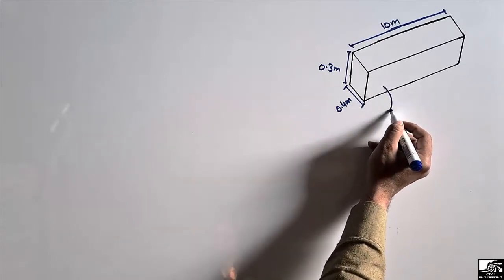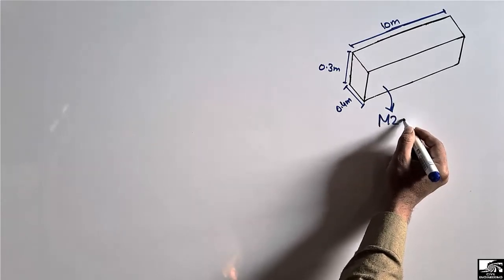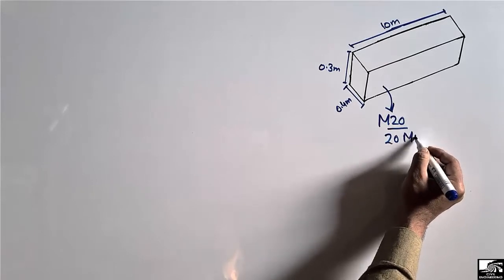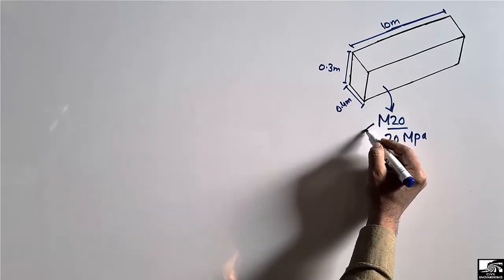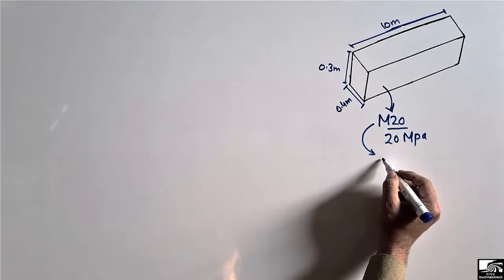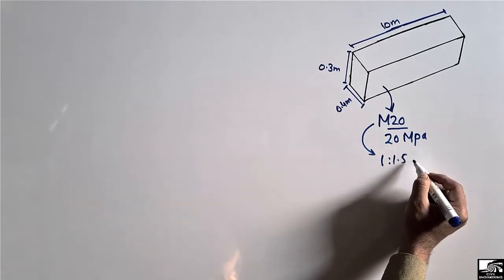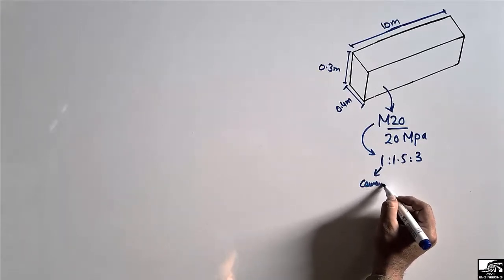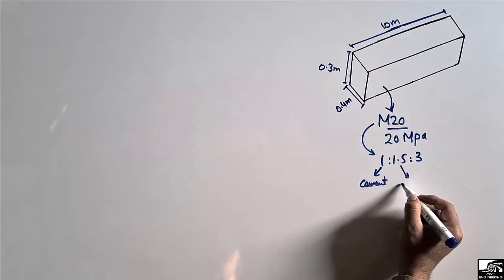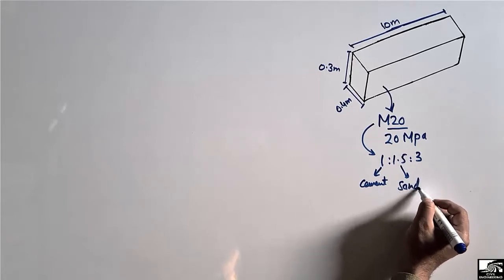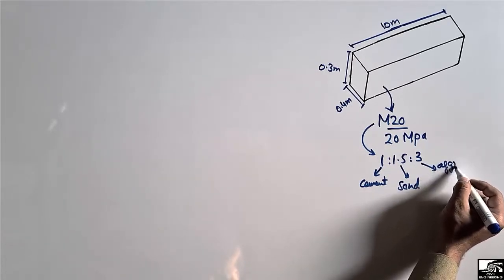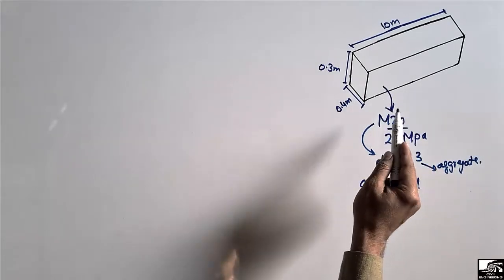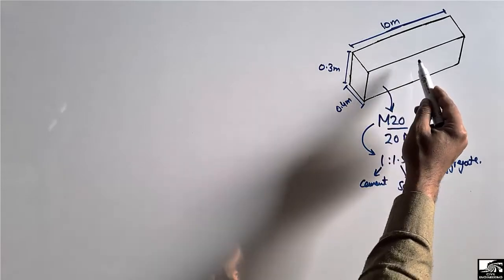Let's suppose that this beam is made up of M20 grade concrete. This means that it has a compressive strength of 20 megapascals. M20 grade of concrete has a mix ratio of 1:1.5:3, where the first value represents cement, the second represents sand, and the third represents aggregate.